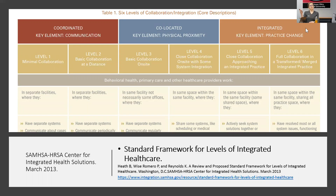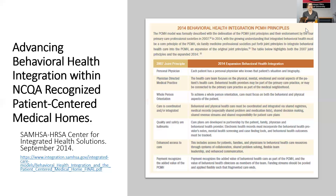The more fully integrated practices are levels five and six. Level five — close collaboration approaching an integrated practice — involves pretty good collaboration, probably regular team meetings, working within the same EMR, but still two separate practices. Level six is full collaboration, a transformed merged practice where everything is within one entity. It's no longer two organizations trying to figure out how to make it work, but one organization that makes all of the services available.